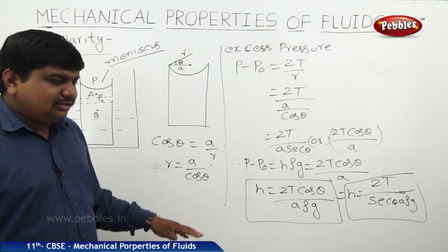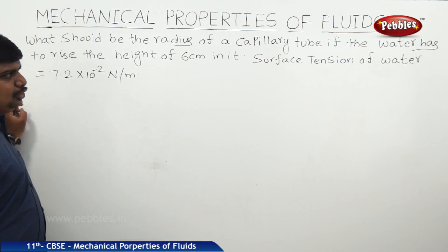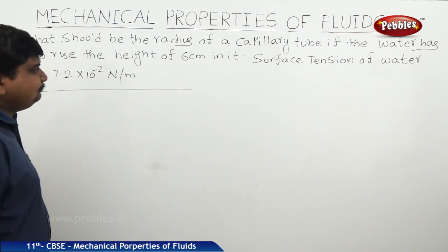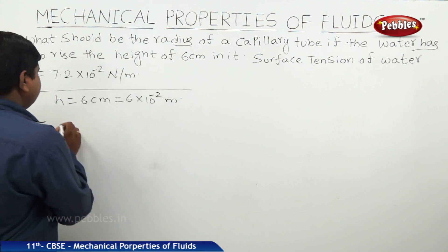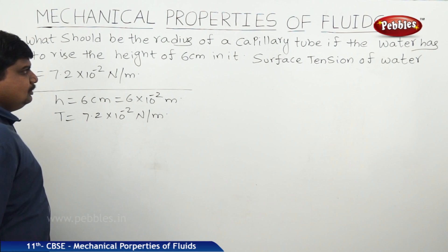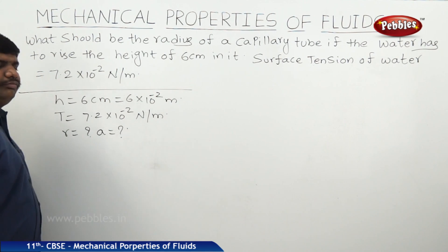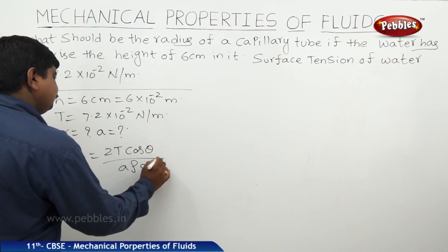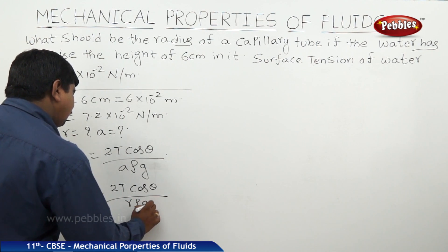Now we will discuss a numerical problem based on capillarity. What should be the radius of a capillary tube if water has to rise to a height of 6 centimeters? The surface tension of water is 7.2 into 10 to the power of minus 2 Newton per meter. We need to find the radius. Height H equals 6 into 10 to the power of minus 2 meters. Using H equals 2T cos theta by A rho g, we can rearrange to find R equals 2T cos theta by H rho g.